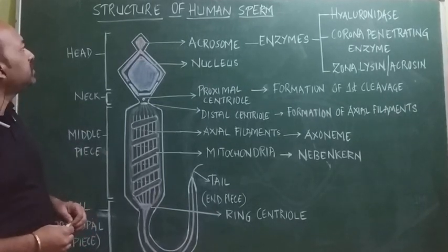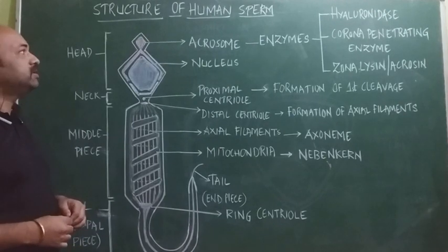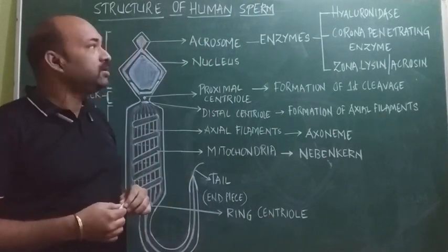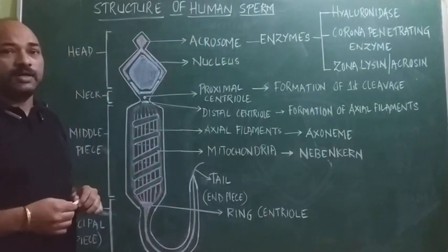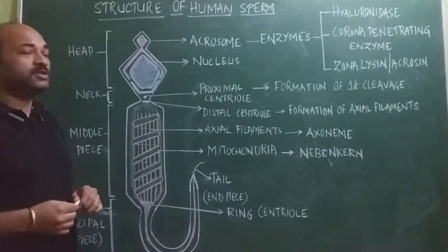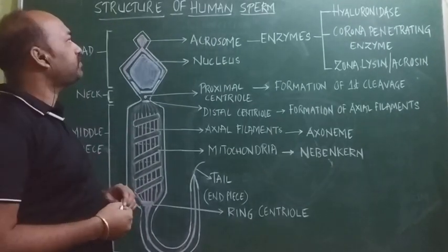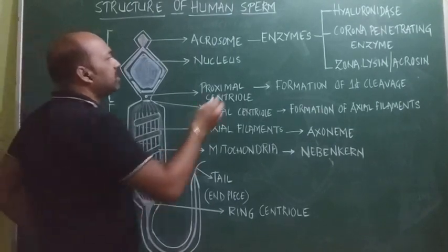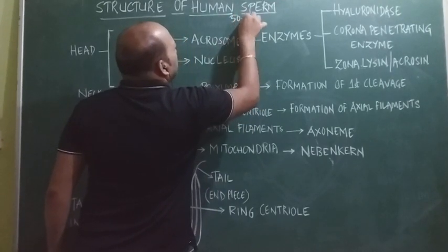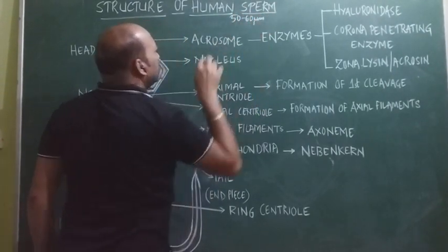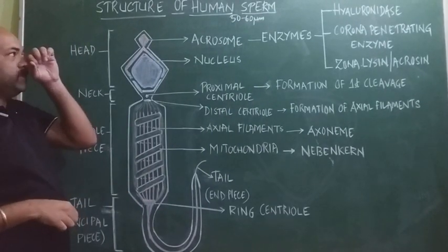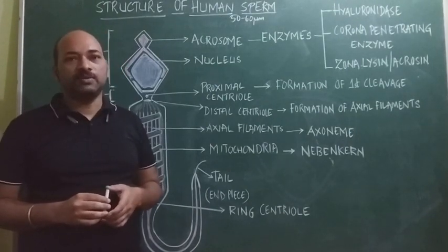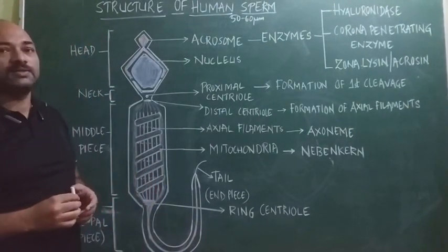In today's class we will be discussing the structure of human sperm. Sperm is a motile male gamete which is involved in the process of fertilization. It is microscopic, generally around 50 to 60 micrometers in length. Sperm is formed in the seminiferous tubule of the testis by a process called spermatogenesis.